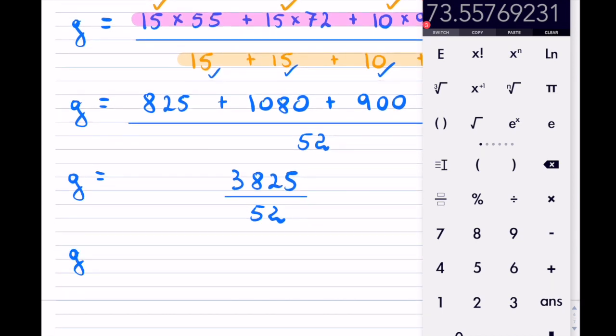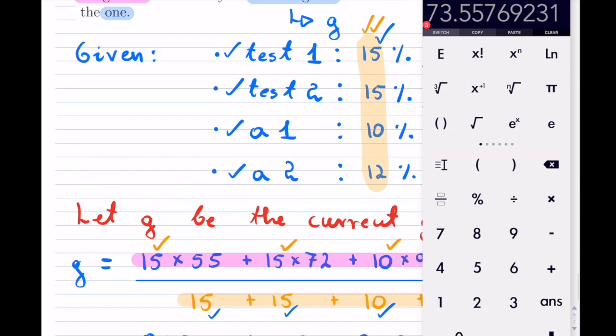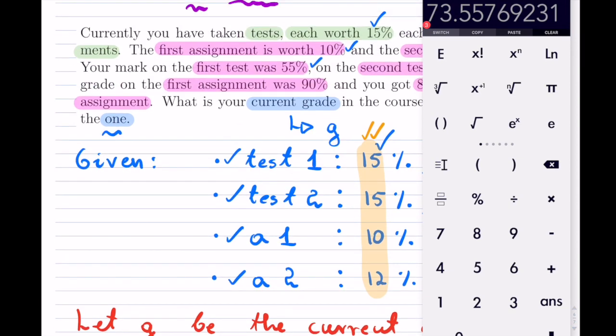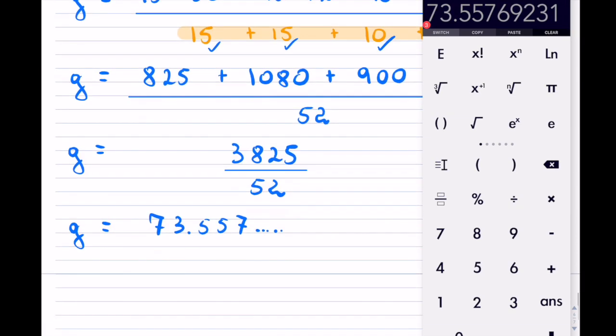So our grade equals 73.557 and so on. Now we were supposed to round to the 1 decimal place. So our 1, that's right here.